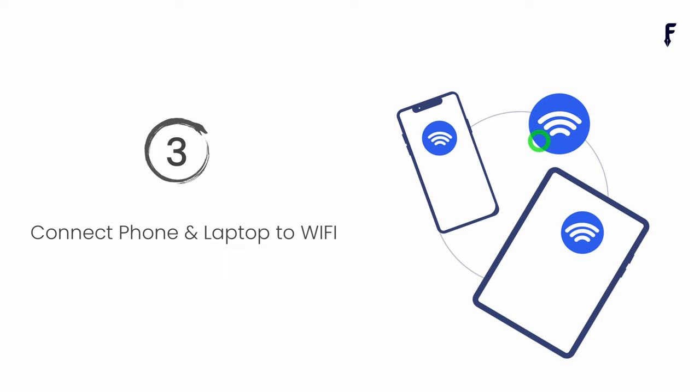Situation number two: you don't have any Wi-Fi and you only have two devices — your phone and your laptop. In this case, turn on the internet and hotspot on your phone, then directly connect your laptop to your mobile phone's hotspot. This step will also work — I have tested it. In my setup, my laptop and phone are both connected to an external Wi-Fi from a Jio router.